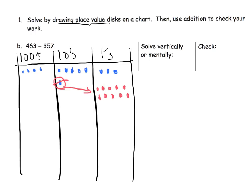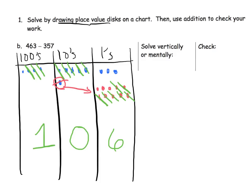Now we do have enough ones to take away seven, so we're going to cross off seven: one, two, three, four, five, six, seven. That leaves us with six ones. Next we take away five tens — that's exactly what we have — leaving nothing in the tens column. Then we take away three hundreds from four hundreds, leaving one in the hundreds column. So the answer is 106.